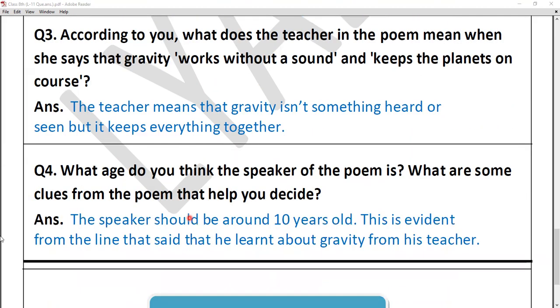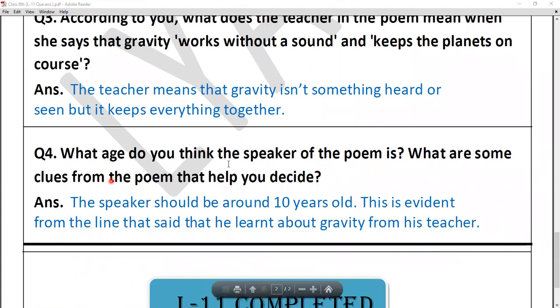Question number four, and last question of this chapter is, what age do you think the speaker of the poem is? What are some clues from the poem that help you decide? Now you will just decide the age over here. And in our poem, there were some clues which will help us to understand. Yes, the answer is, the speaker should be around 10 years old. This is evident from the line that said that he learned about gravity from his teacher.